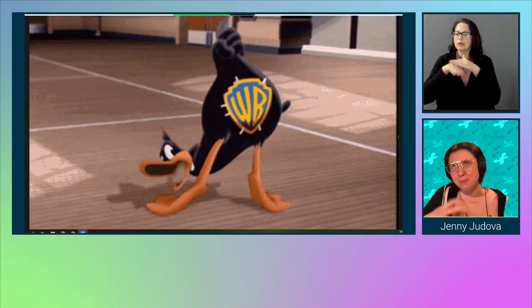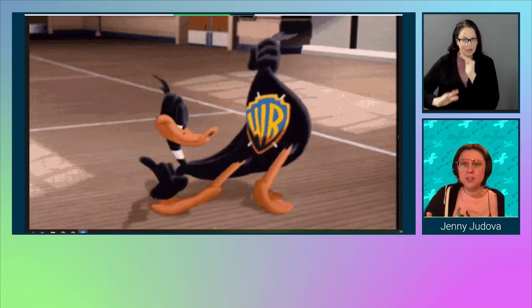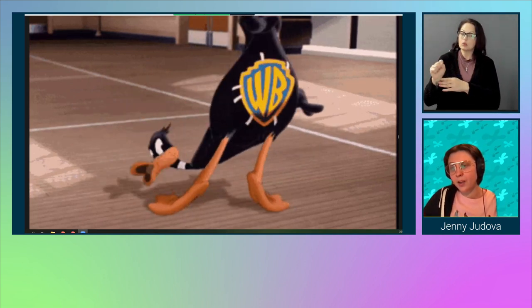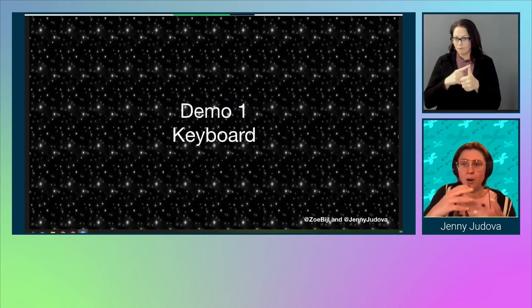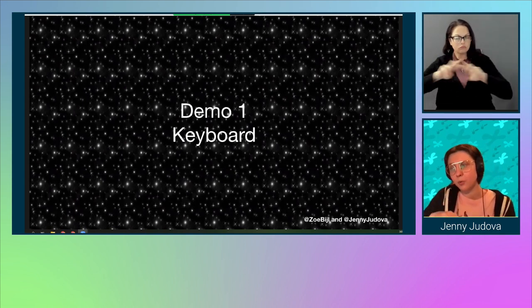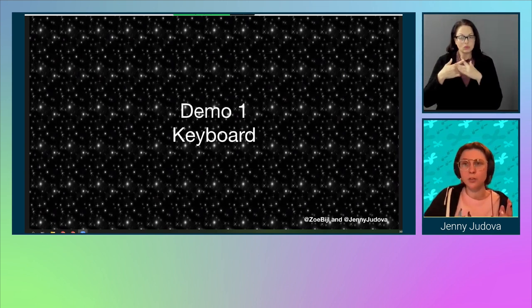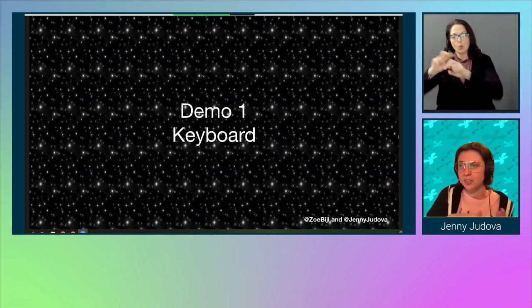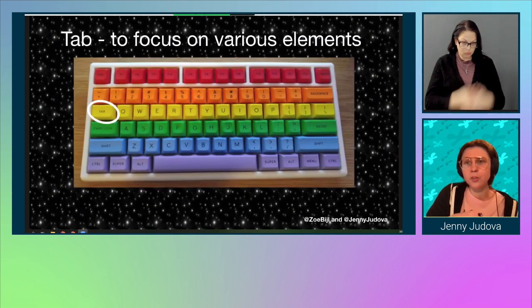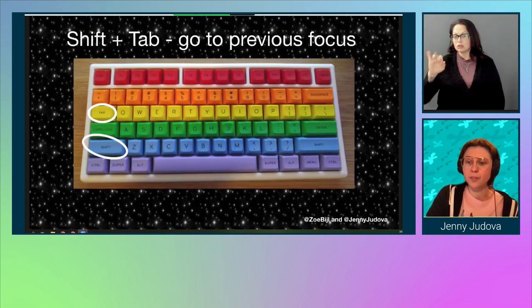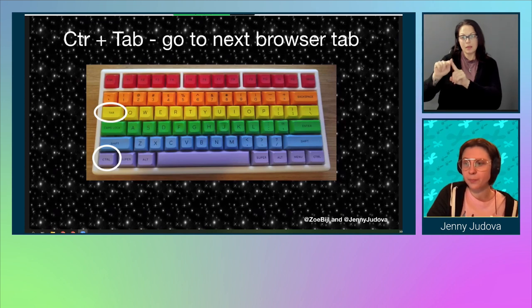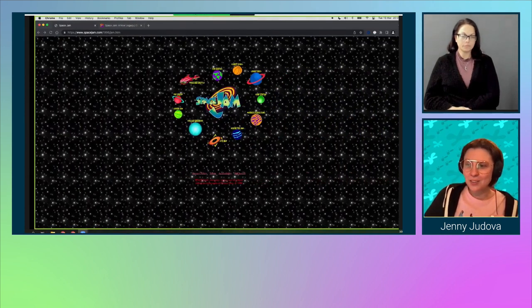Does corporations promising to be accessible actually translate into accessible websites? Have two decades of experience and tooling actually made the web more accessible? And is the new Space Jam website better than the old one? We'll focus on these three questions in our demos. In the first demo we'll check how easy the websites are to navigate using keyboard only — starting on the landing page, navigating to another page, and then coming back. Here are the keys I'll use: Tab to focus elements, Shift+Tab to go to previous focus, Enter to click links, and Control+Tab to switch browser tabs.